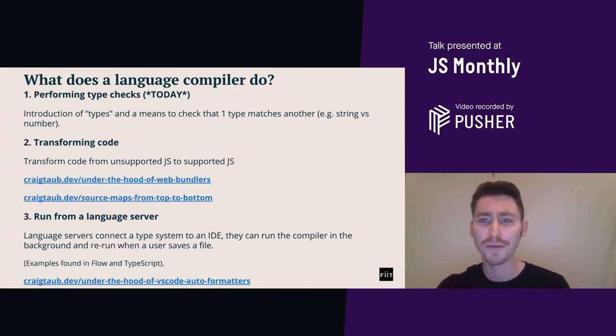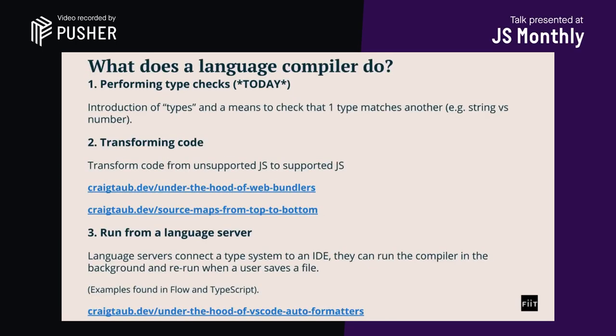A few of the core jobs found in any type system are: one, performing type checks — by this I mean the introduction of types, often via explicit annotations or implicit inference, and a way to check that one type matches another. Then there's two, transforming code — many type systems contain code which is not supported in native JavaScript. For example, type annotations are not supported, so they must transform from unsupported JavaScript to supported JavaScript.